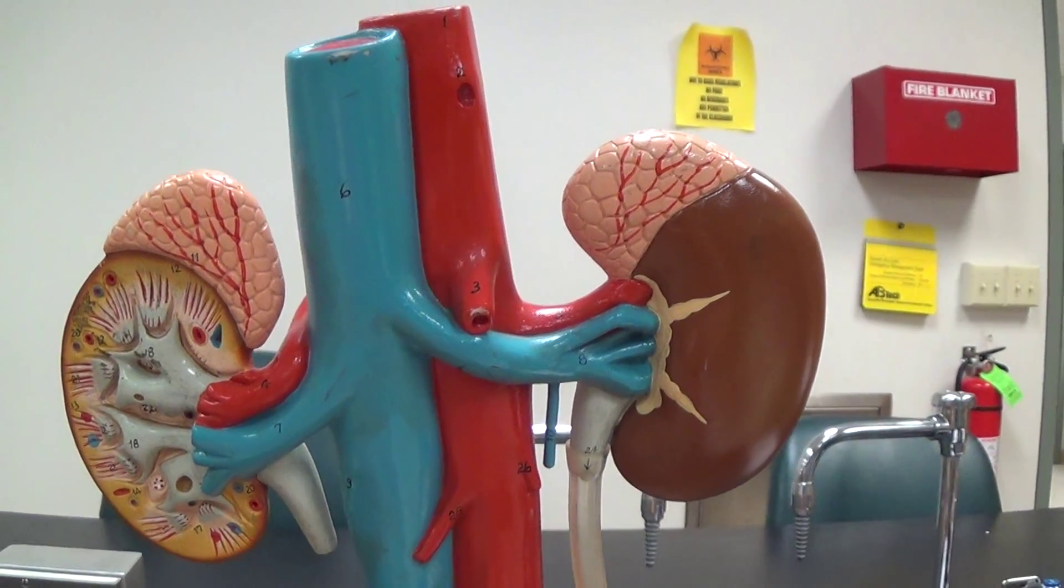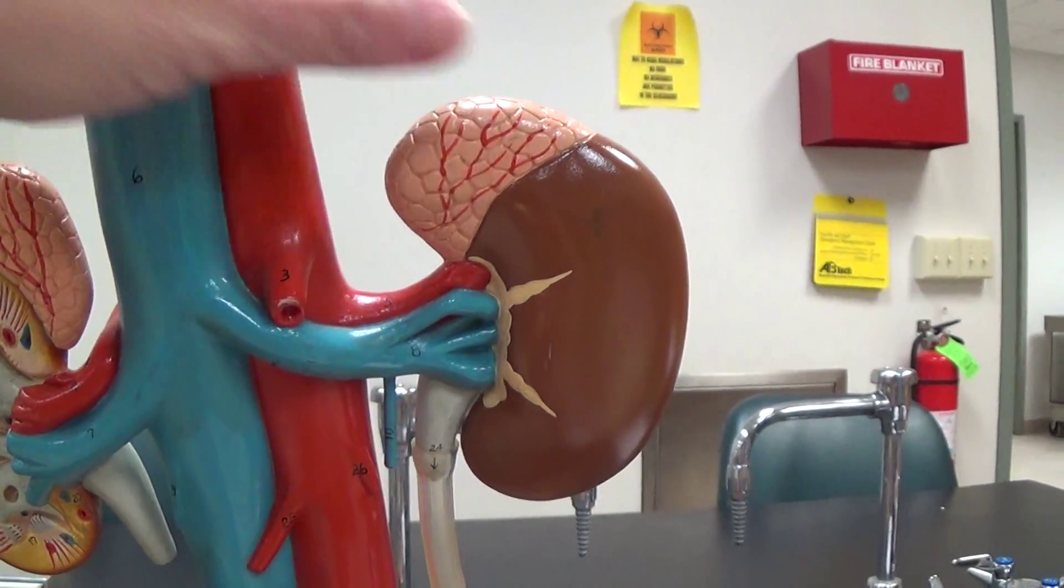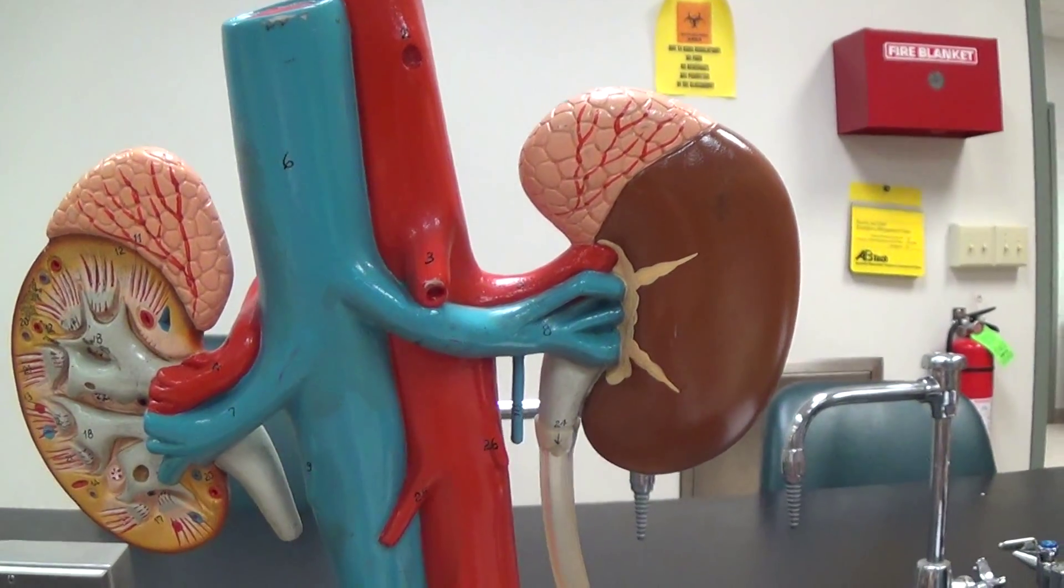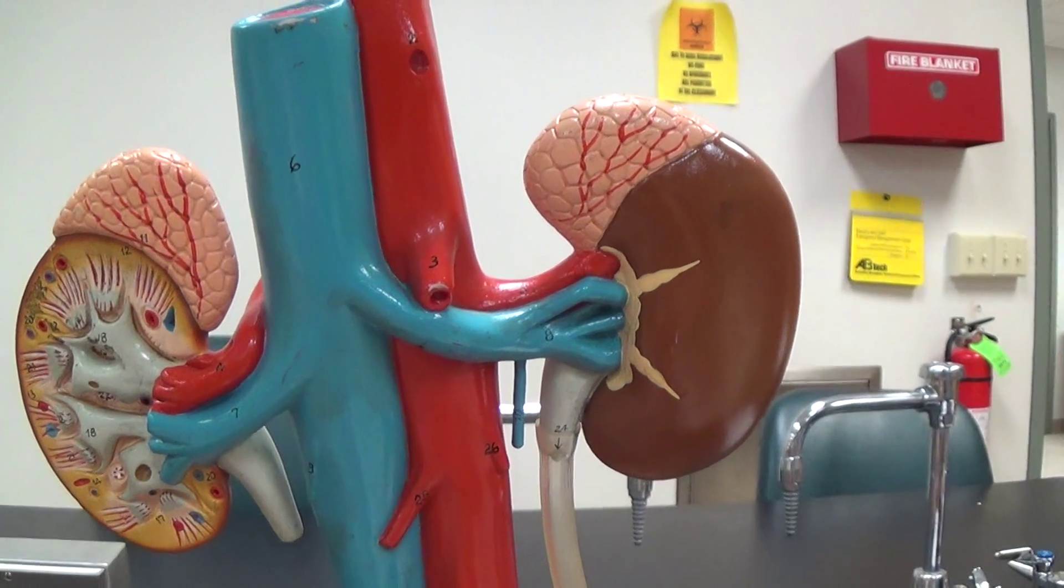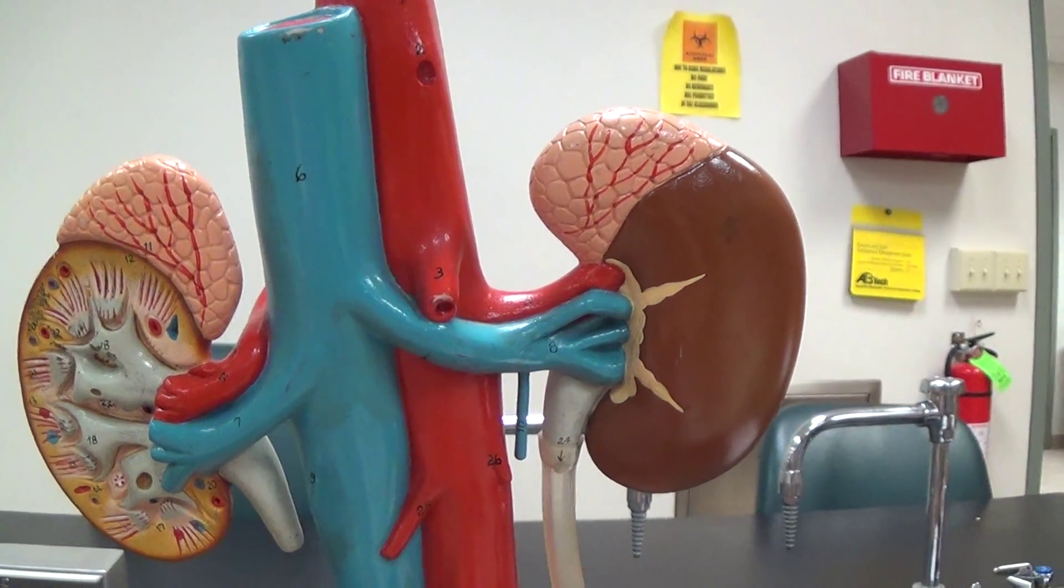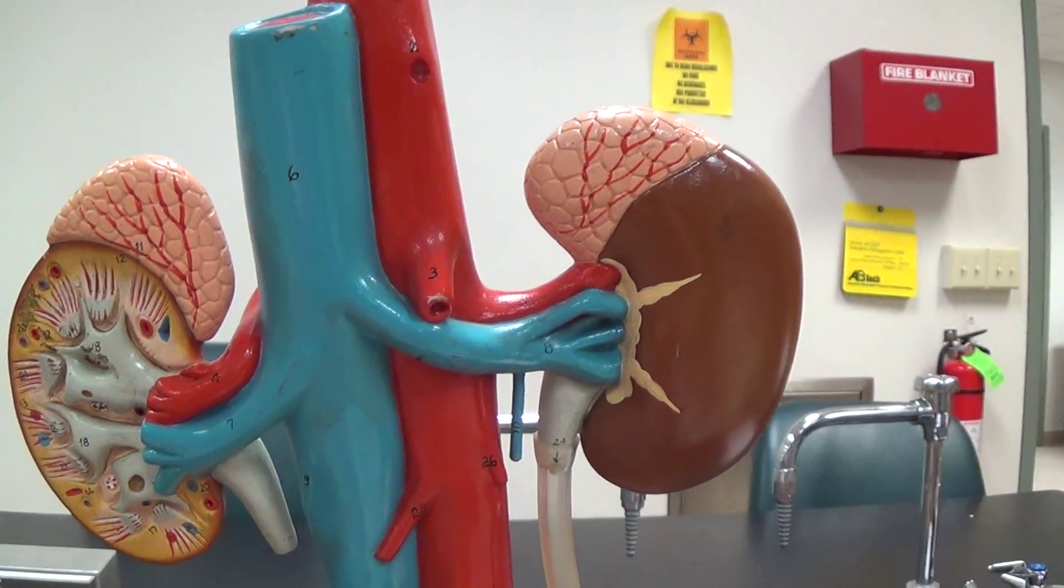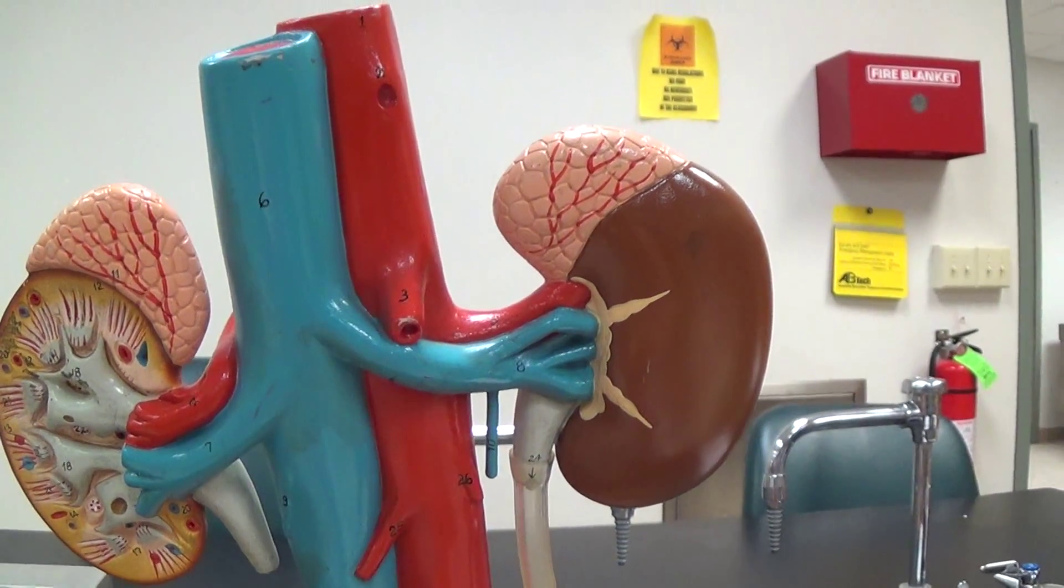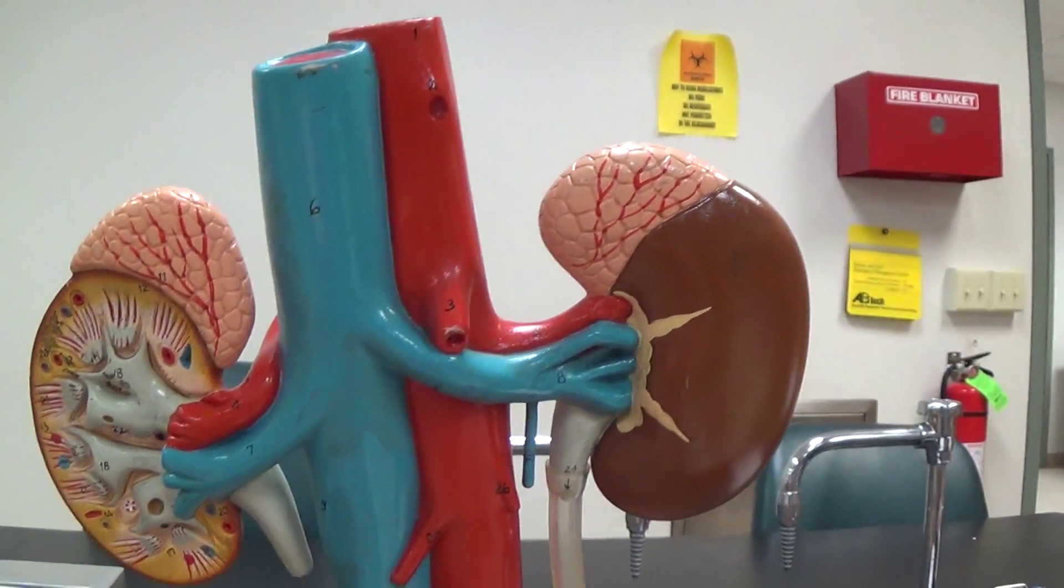Sitting on top of the kidney, we have the adrenal glands, which we previously covered in the endocrine system. Remember they had several different zones and then the medulla inside, and different hormones were produced in each of those different layers.